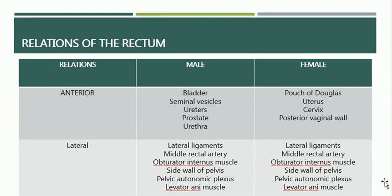Laterally, in males, the rectum has relations with lateral ligaments, middle rectal artery, obturator internus muscle, side wall of the pelvis, and pelvic autonomic plexus. In females, the lateral relations are almost similar — lateral ligaments, middle rectal artery, obturator internus, side wall of the pelvis, pelvic autonomic plexus, and levator ani. So in males and females, the lateral relations involve the same structures.